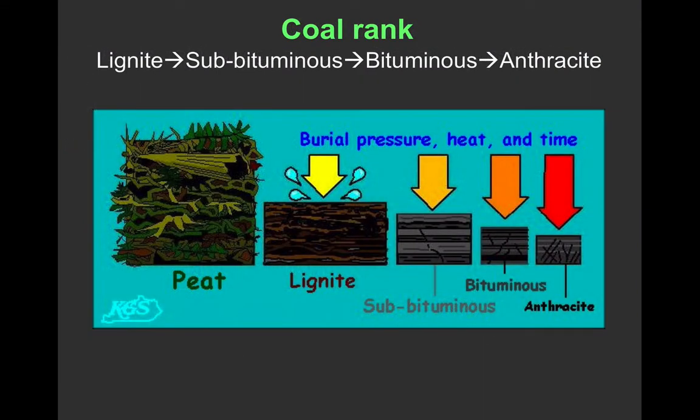These different stages have names. We start with peat. With some pressure, that turns into a material called lignite. As that continues with more heat, pressure, and time, we go through a stage called sub-bituminous coal, then bituminous coal, and finally we end up with anthracite — the highest rank and best type of coal.